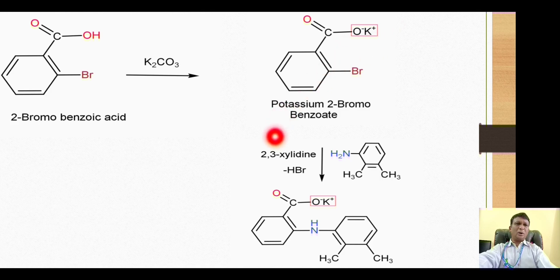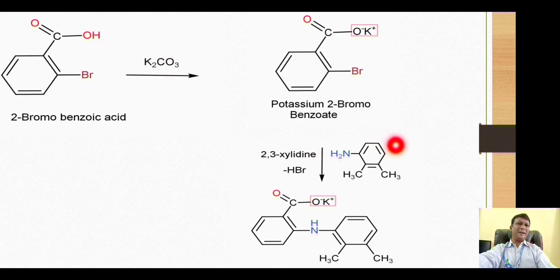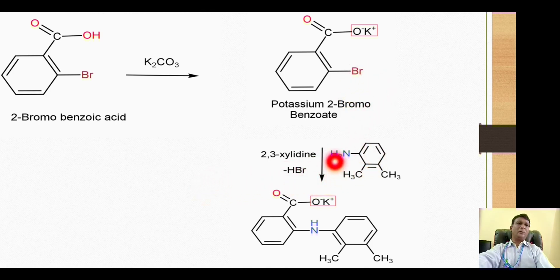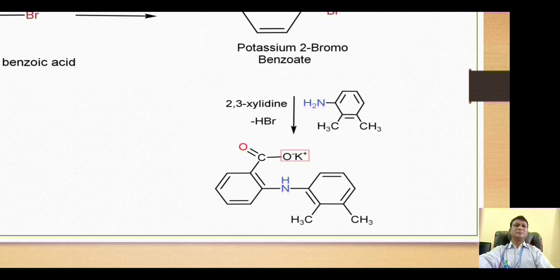If the potassium salt were not formed, this amino group may attack on the carbonyl carbon and thus bring about nucleophilic acyl substitution to give the corresponding amide. So to avoid the formation of an amide, the benzoic acid is first converted into its potassium salt, so that the amino group will not attack on the carbonyl carbon but rather on the carbon bearing the bromine to give the nucleophilic aromatic substitution reaction. When substitution takes place, there is release of an HBr molecule, and thus we have attachment of the NH group along with the ring.